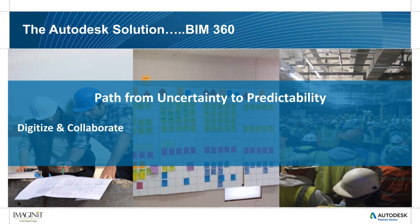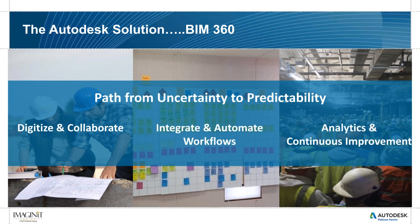As we already know, if you're already using BIM 360, it's all about the path from uncertainty to predictability. The first part is being able to digitize and collaborate our documents and information, integrate and automate workflows. And the last part — really the most important part of BIM 360 — is the analytics, and because of the analytics, the ability to create a culture or process for continuous improvement.